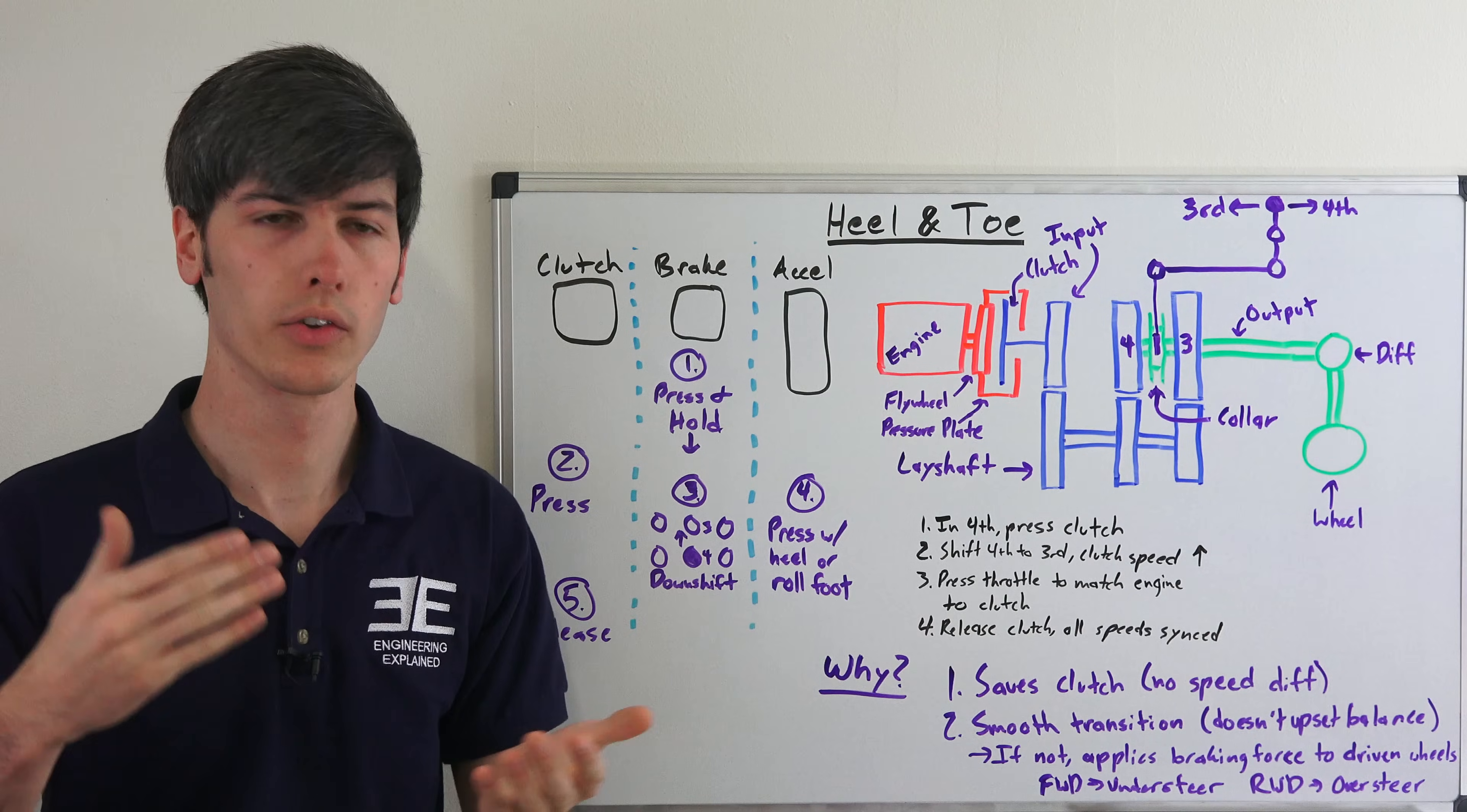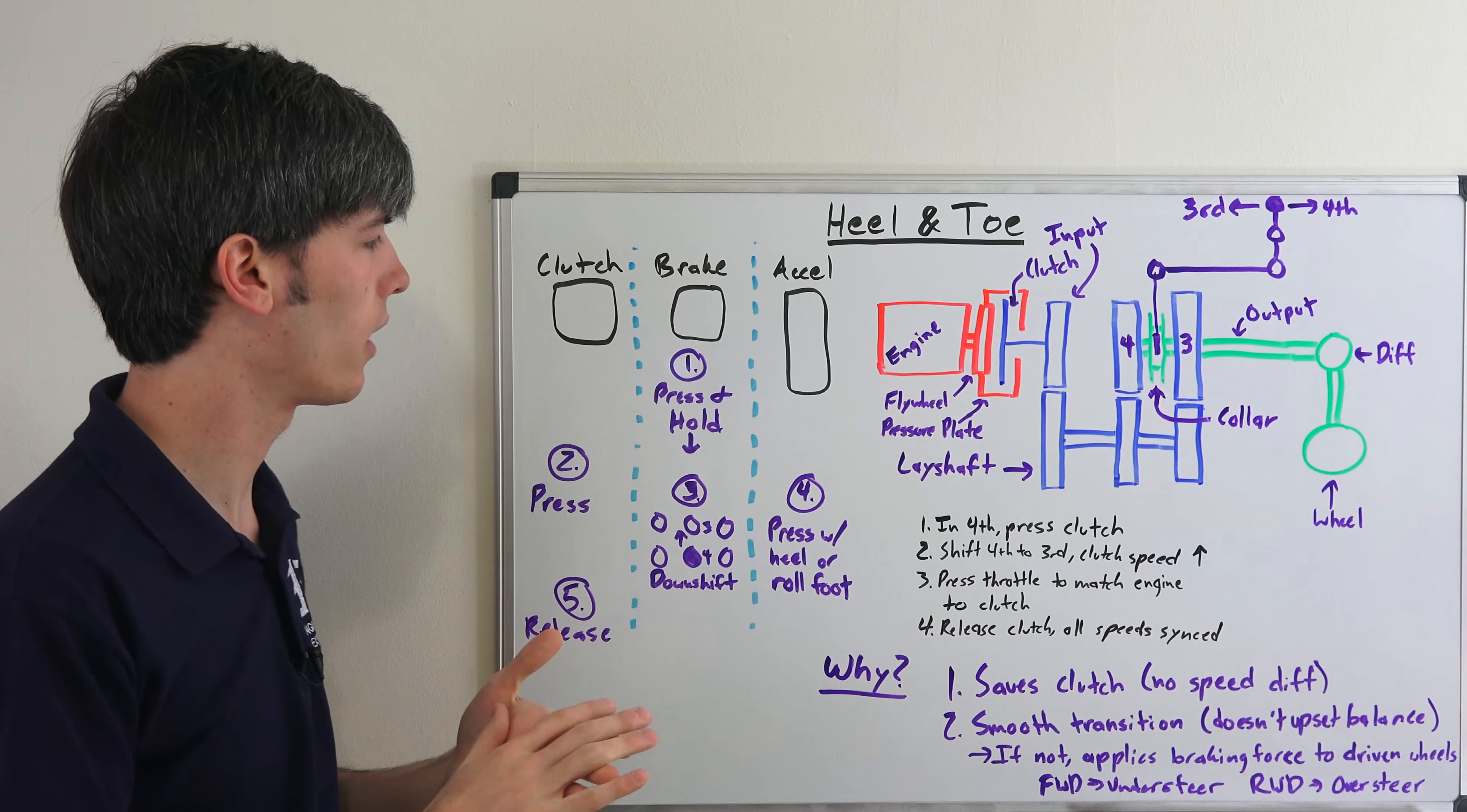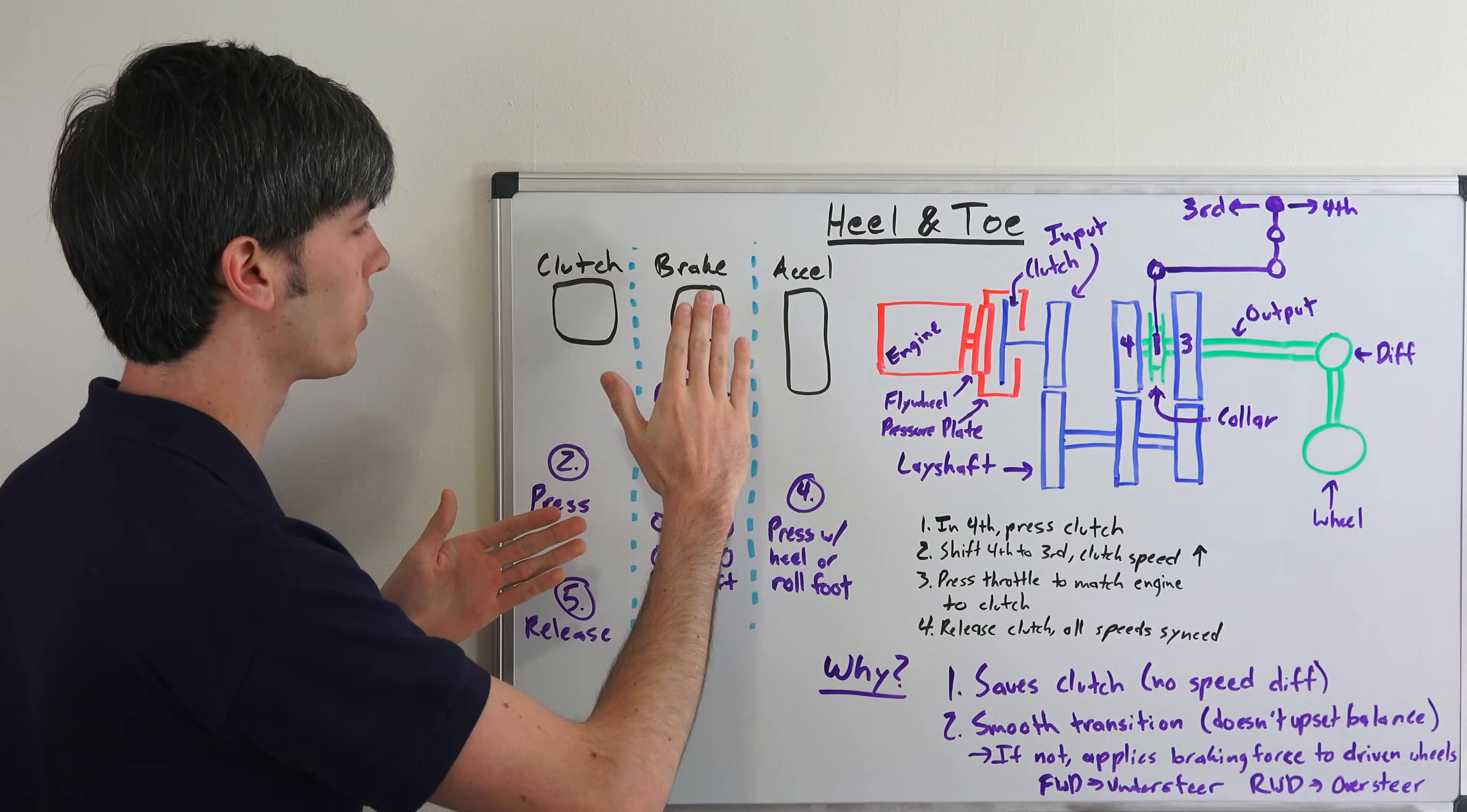while you're on the brakes. So let's say you're coming into a corner, you're on the brakes. You want to downshift so you can exit that corner and accelerate out with a better gear. And so you want a smooth transition in doing so, and this is the process for doing that.